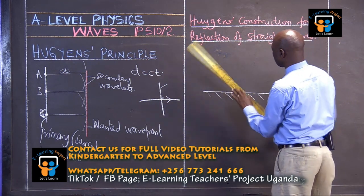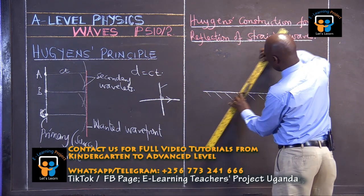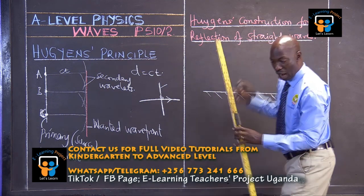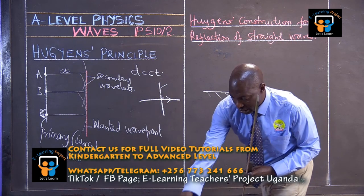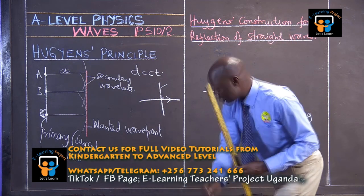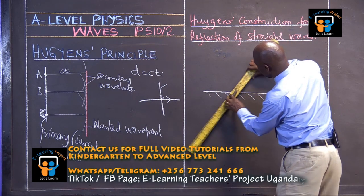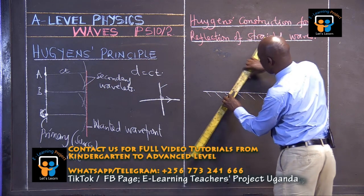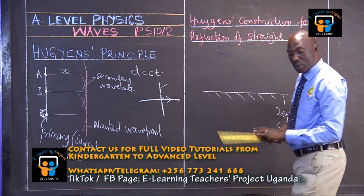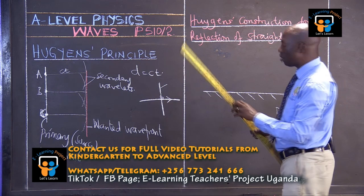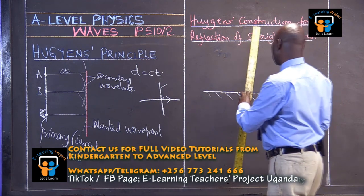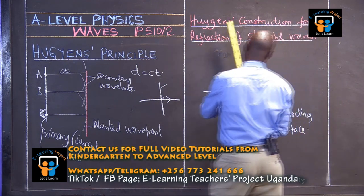So if we take our wavefront — if our wavefront is here, for example — our wavefront is oblique on a surface. It is oblique on this surface.